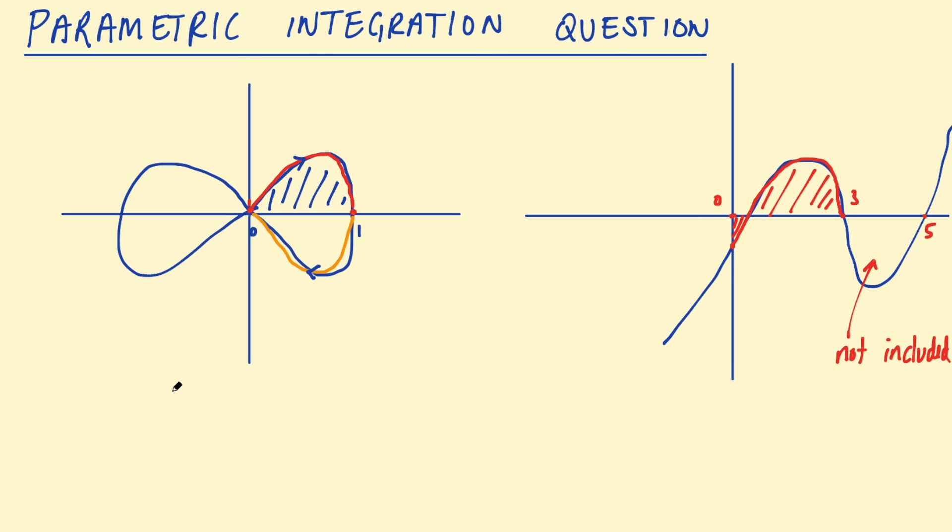So yeah that was my attempt at an intuitive explanation of this question. Basically it's like a feature or a bug of integration, you're only ever integrating part of the curve. And in a parametric curve looking at a particular interval, even though there is part of the curve above and below the x-axis, you're still only ever integrating part of that curve. You're not including the interval from 1 to 0. I hope that made sense. If not let me know in the comments and I'll try to think of a better explanation. Thanks for watching.